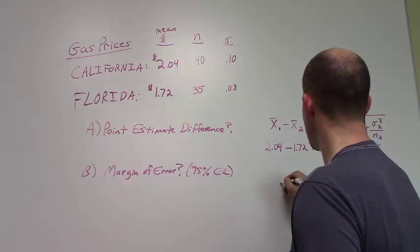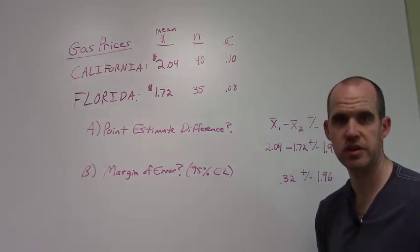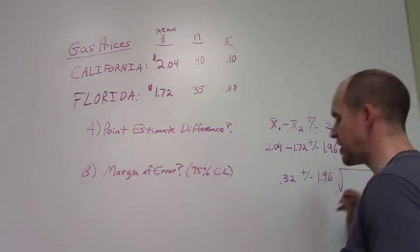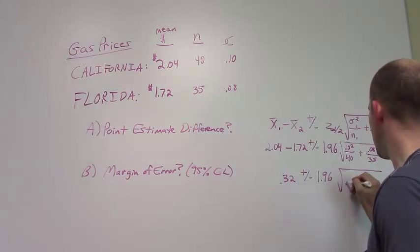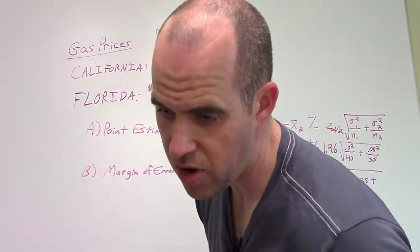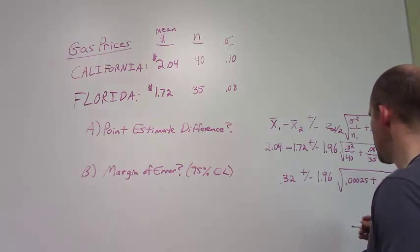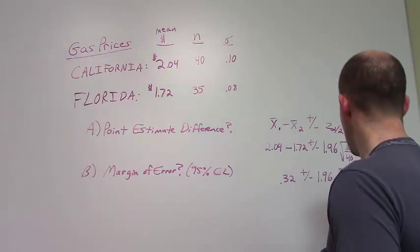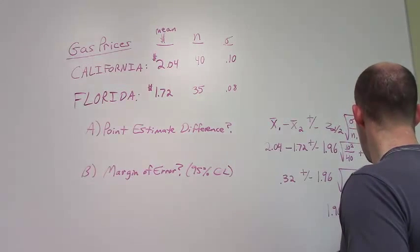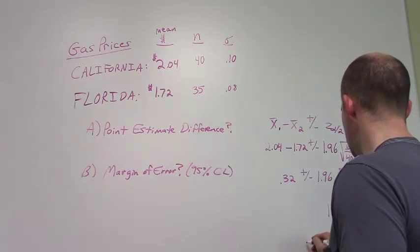Okay, so we know that this is 32 cents plus or minus 1.96. Now let's actually do some math. If you were to undertake this math, you'll get something that looks a little bit like this. This is at four decimal places: 0.00025 plus 0.0001829. Add those together and you get 1.96 times 0.02081. And then if you add that together, rounding up to two decimal places, you get 4 cents.